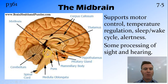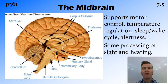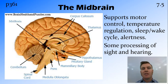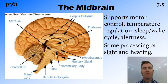Above the hindbrain we have the midbrain, and the midbrain controls some of those slightly higher-order functions, like motor control, temperature regulation, and alertness. There is some processing of sight and hearing that occurs here in the midbrain, but only at more of a detection level.